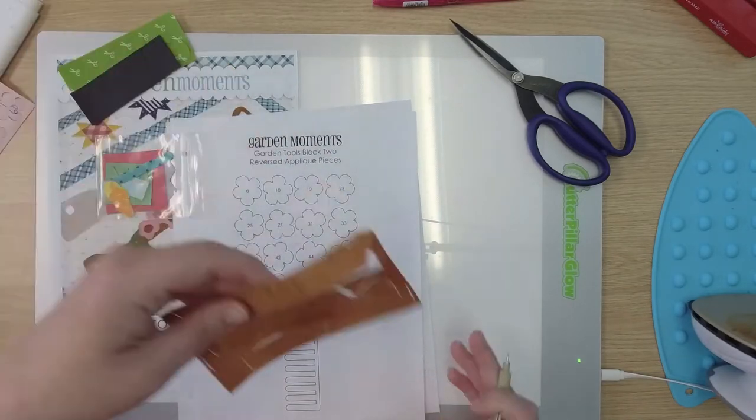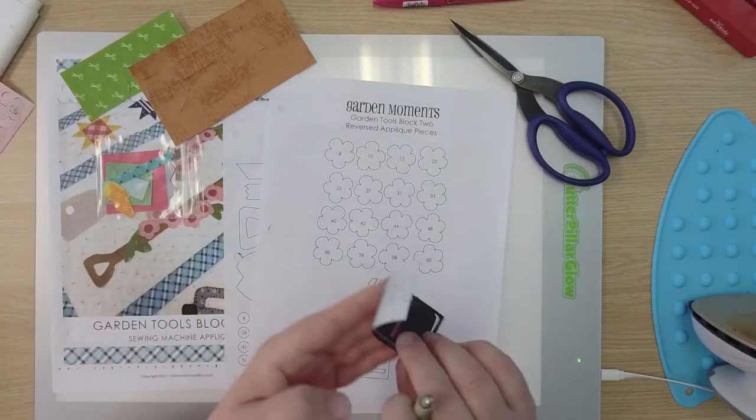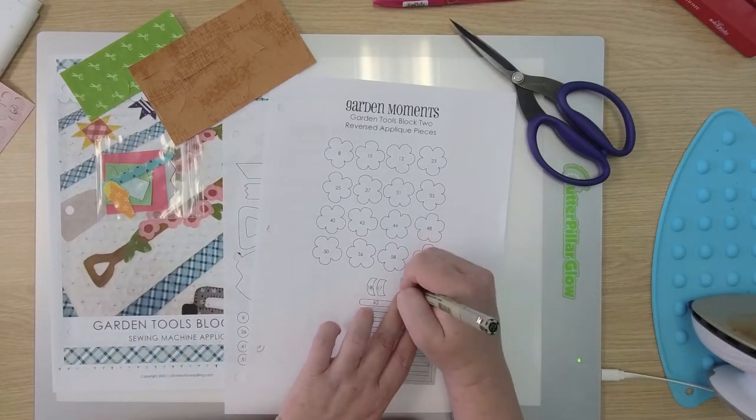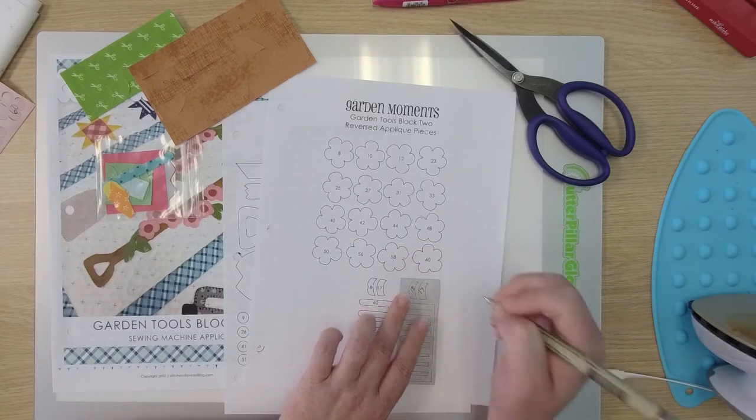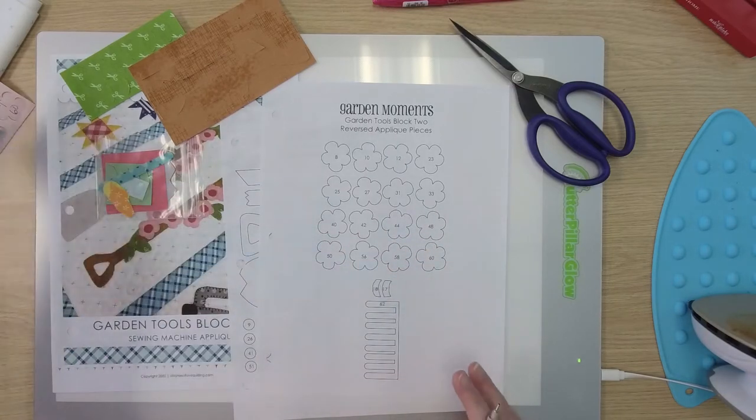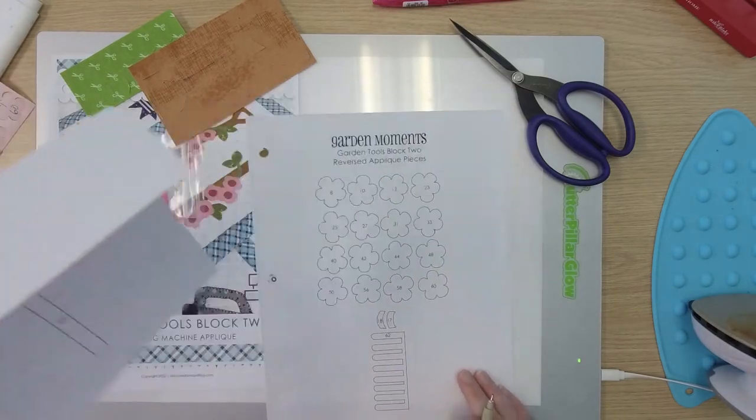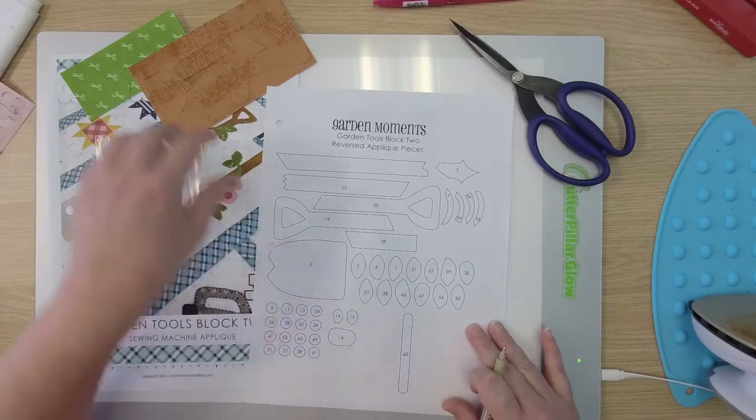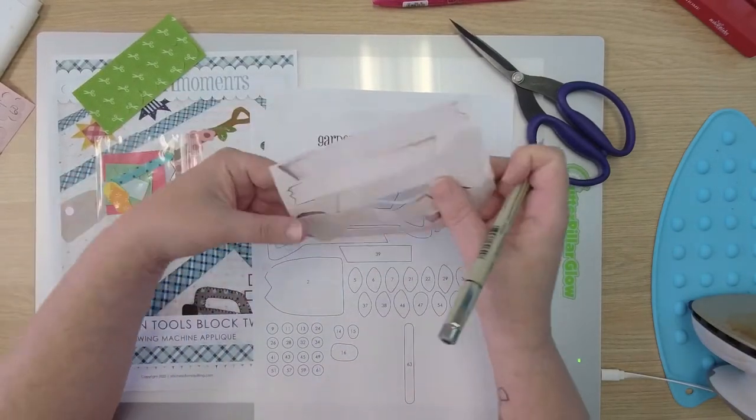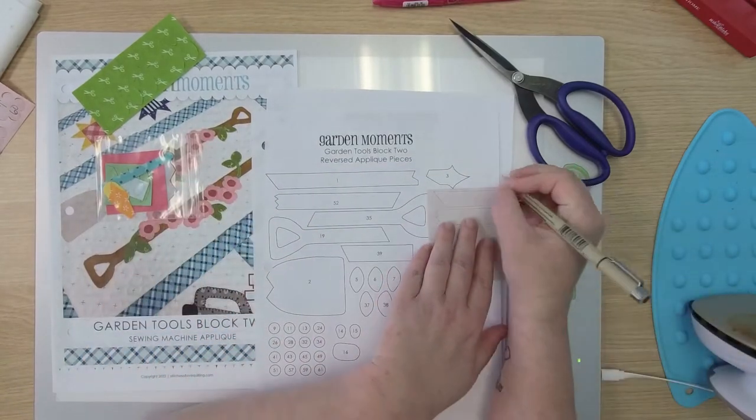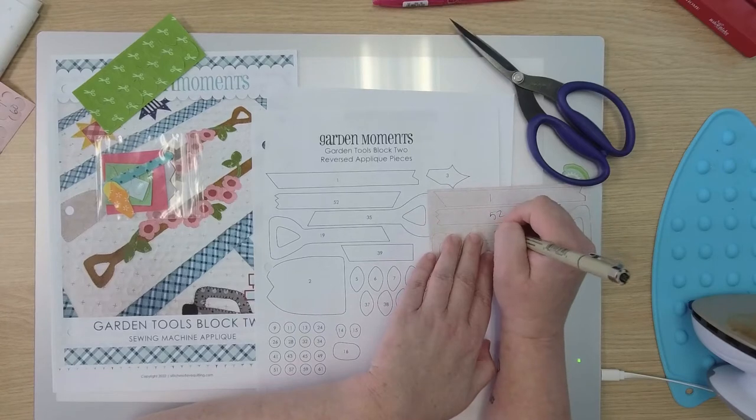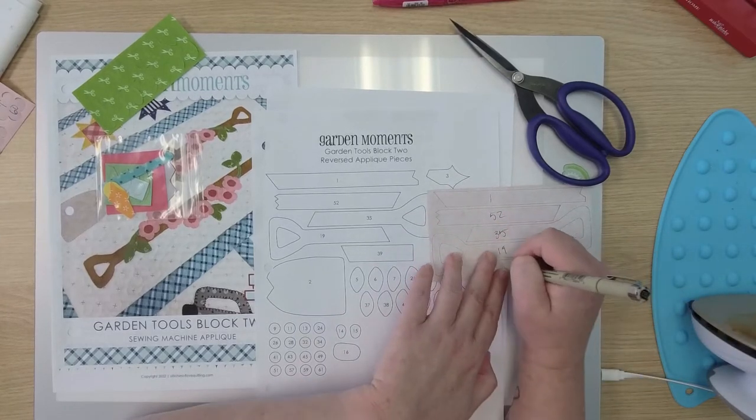And there we go, let's draw our arrows. Now we're going to set these aside, they're already numbered. Let's go to our next piece. This is our charcoal piece. Just flip it over and again laid out in the perfect direction. You don't need to put arrows on these because they're pretty self explanatory how they go. Now we'll flip over to this other page. We have our garden tools pieces here, we're going to line this up the same way it's laid on the paper. So we have 1, 52, 35, 19, and 39.